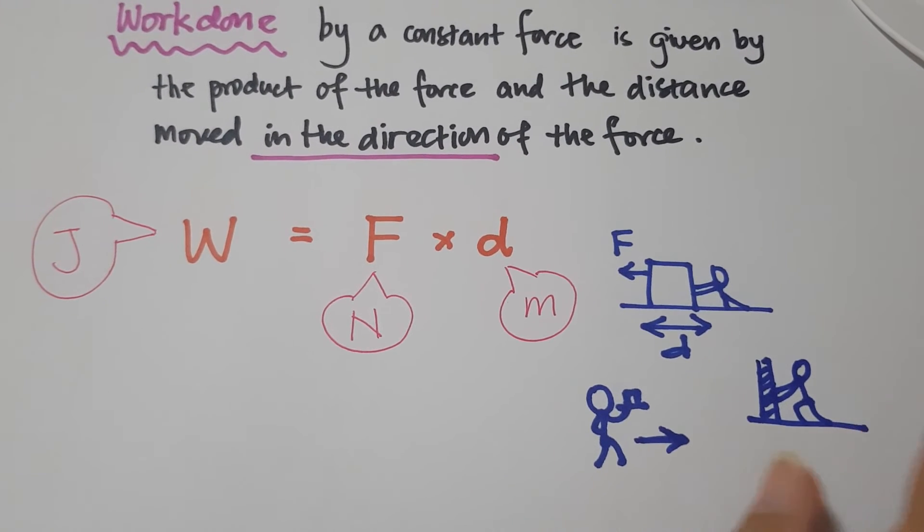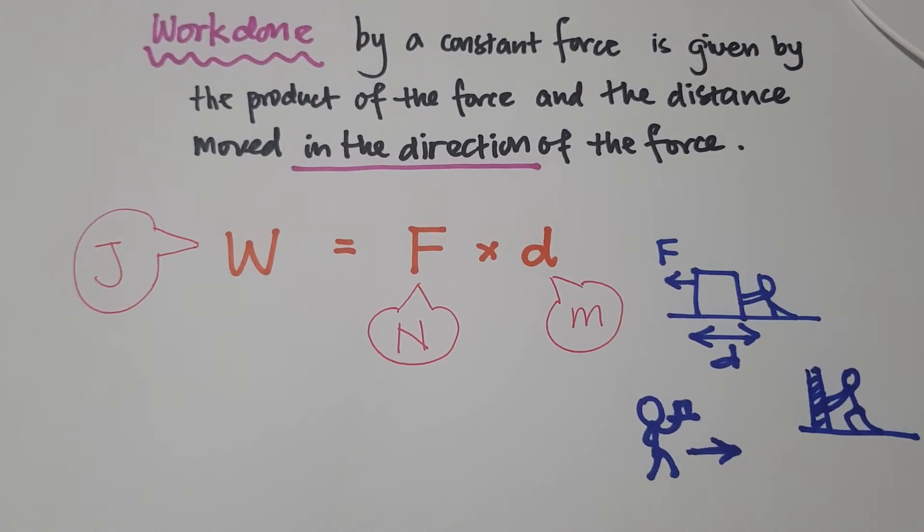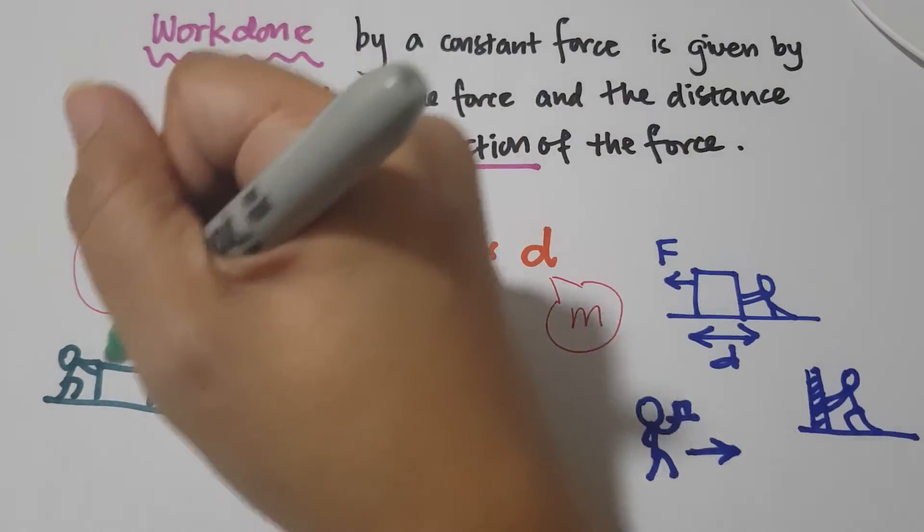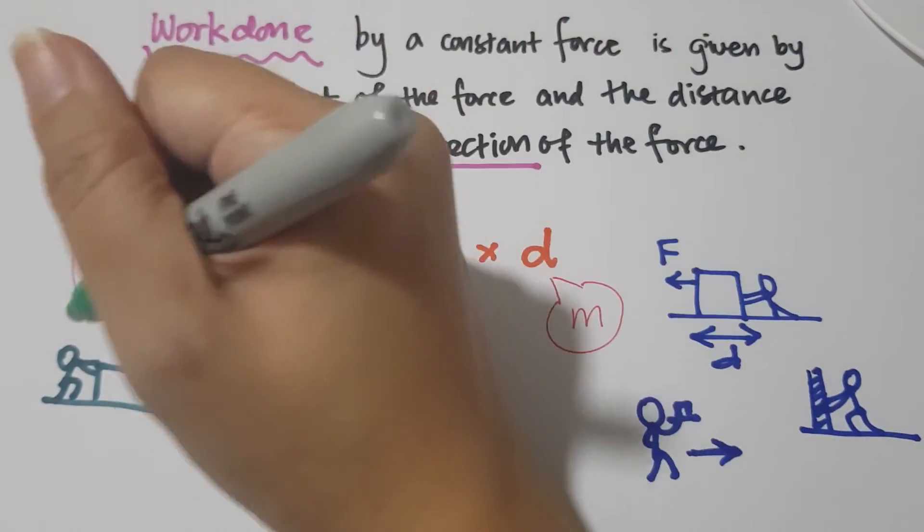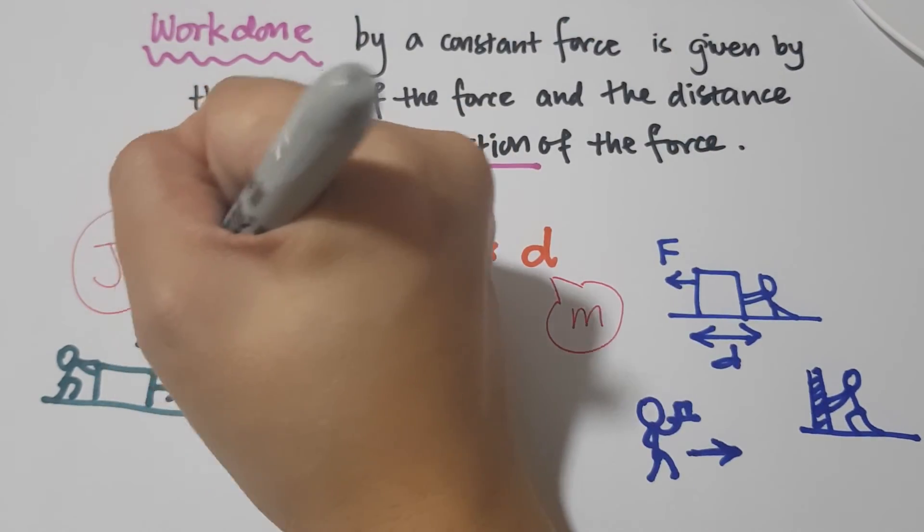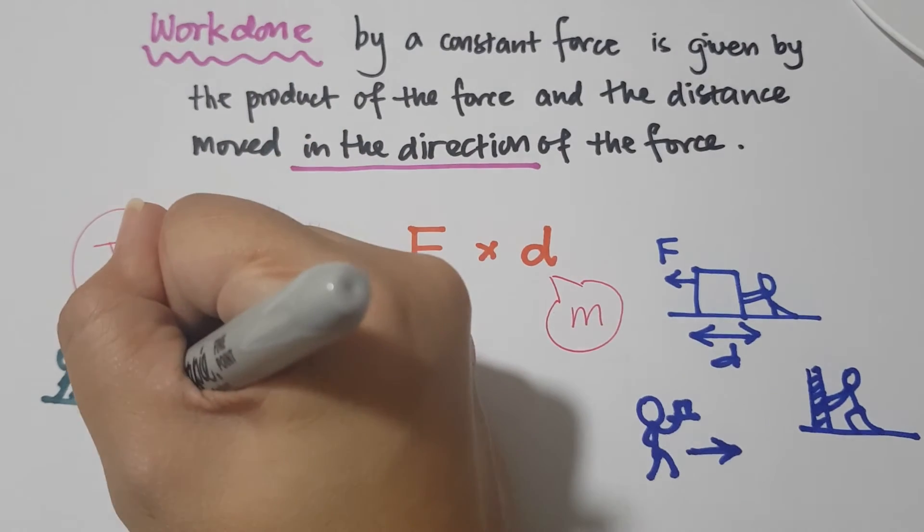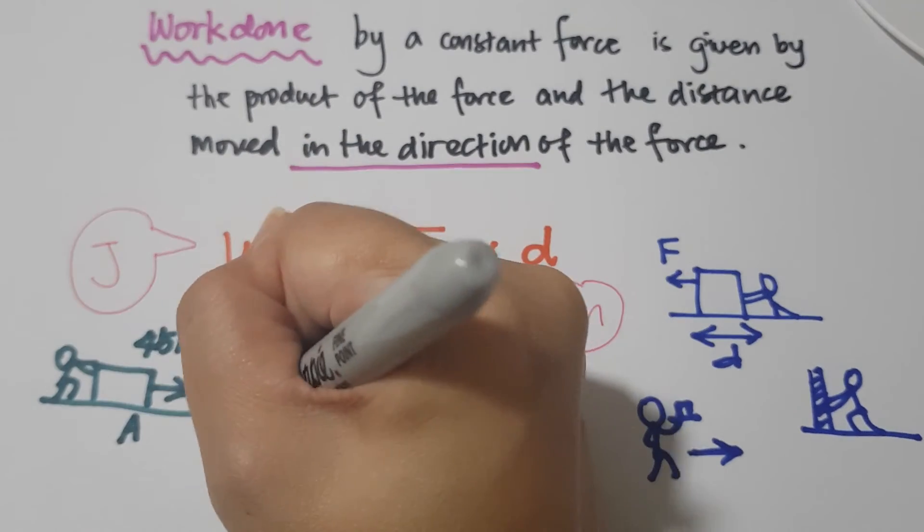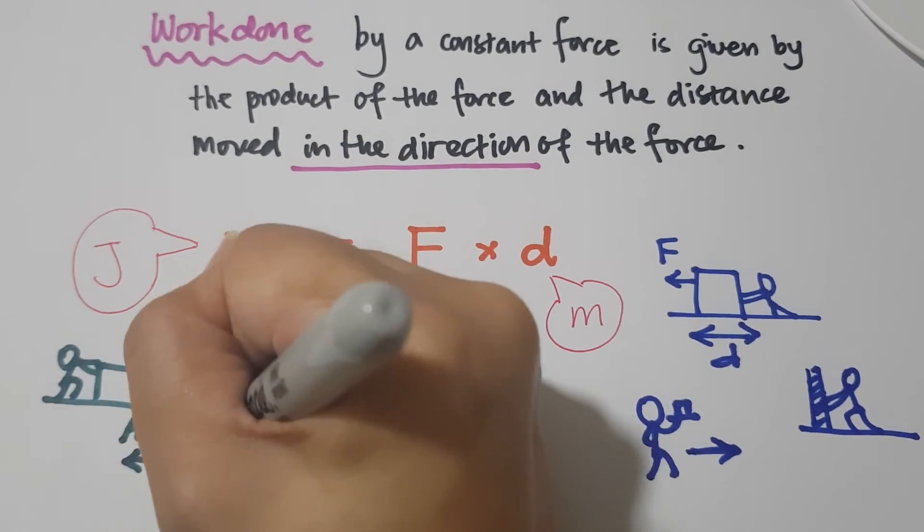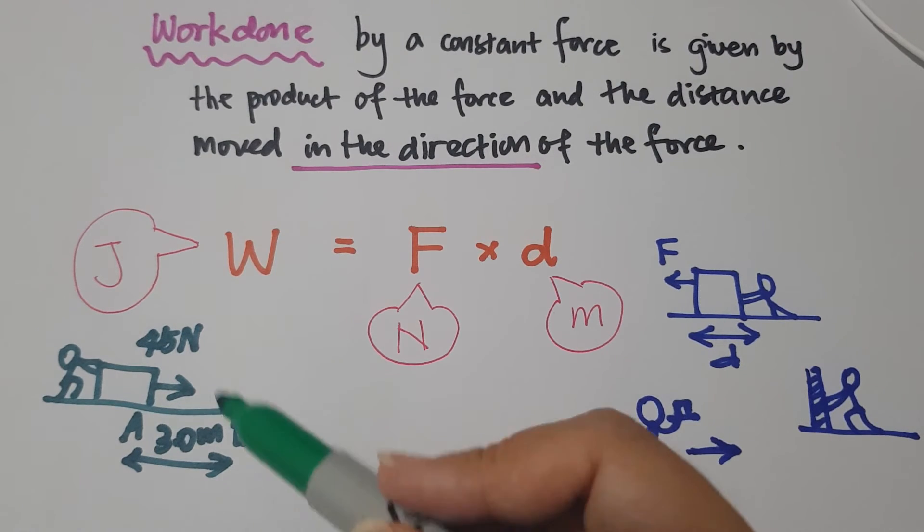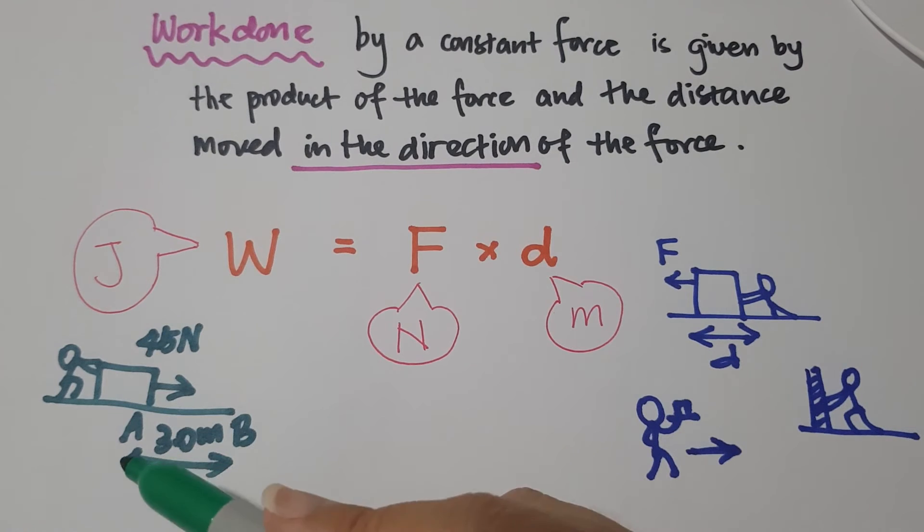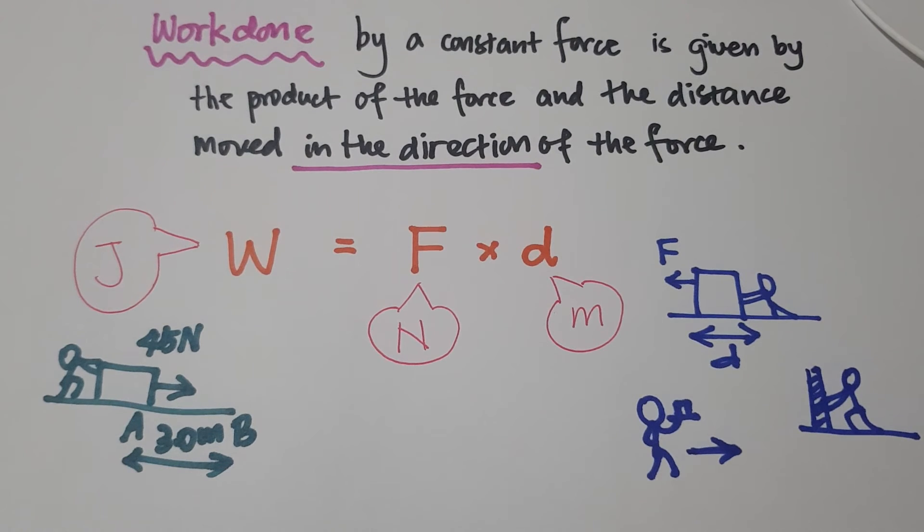So let's see one example. This person is pushing the box in this direction. He is using a 45 N force and pushes it from point A to point B which is 3 meters away. A 45 N force is applied to the box and it moves from point A to B which is 3 meters apart. So calculate the work done.